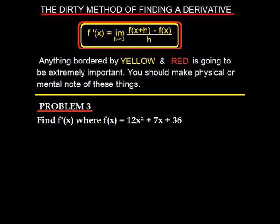Okay, we'll start off with a reminder of the definition of a derivative. And that is f prime of x is equal to the limit as h approaches 0 of f(x+h) minus f(x), all divided by h. So we're going to move on to problem 3 now. And it's asking us to find the derivative where the original function is 12x² + 7x + 36. So we're going to do that right now.